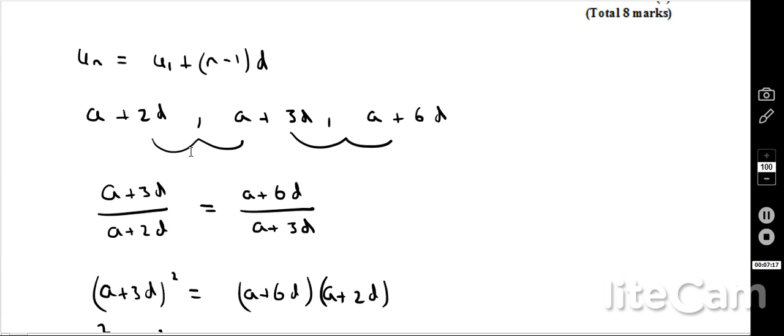Now, because they're consecutive in a geometric sequence, that means the difference between them is going to be constant. The ratio between the first and the second term and the second and the third term will be constant. Therefore, if I do A plus 3D divided by A plus 2D, and if I do A plus 6D divided by A plus 3D, so the upper term divided by the lower term on both times, they have to be the same because it's a geometric sequence.